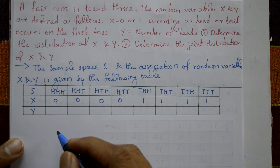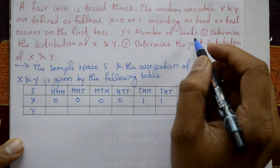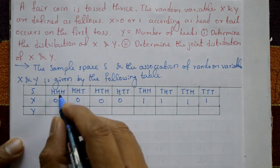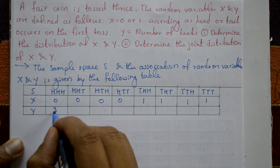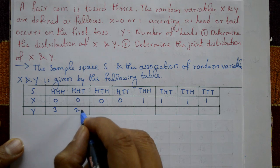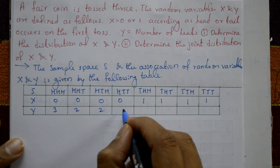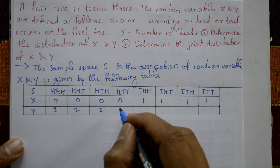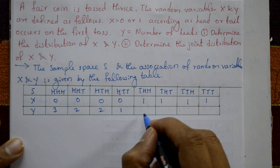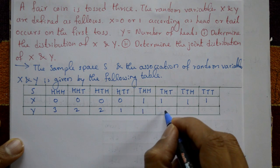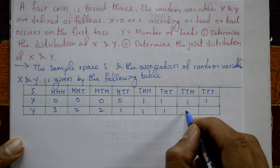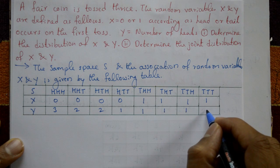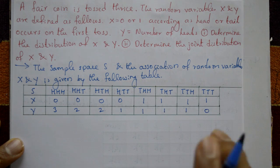Now Y is the number of heads. Counting the number of heads for each outcome: 3, 2, 2, 1, 1, 1, 1, and 0 (no heads). So the Y values are 3, 2, 2, 1, 1, 1, 1, 0.